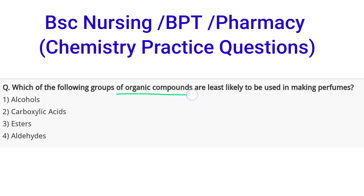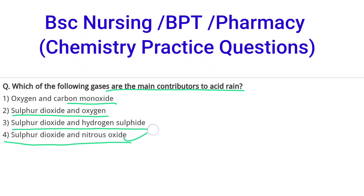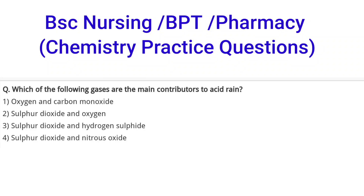Next question: which of the following groups of organic compounds are least likely to be used in making perfumes? Options are alcohols, carboxylic acids, esters, or aldehydes. The correct option is B, that is carboxylic acids — we use these least in making perfumes. Next question: which of the following gases are the main contributors of acid rain? Options include oxygen and carbon monoxide; sulfur dioxide and oxygen; sulfur dioxide and hydrogen sulfide; or sulfur dioxide and nitrous oxide. The correct option is D — sulfur dioxide and nitrous oxide are the two main gases that contribute to acid rain. That's all for today's video — I hope these questions were helpful. If you like this video, don't forget to like, subscribe, and share, and press the bell icon for more updates. Thanks for watching!